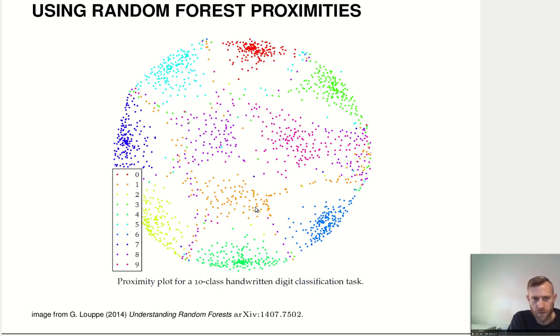So, for example, you can see that the ones, they sometimes end up, depending on how you write a one, very close to seven. So that makes sense. Some ones look like sevens. Some ones seem to be looking like eights, even. Some ones even tend to look like fives, I guess. So you can see how this is spread out basically in a 2D plane.